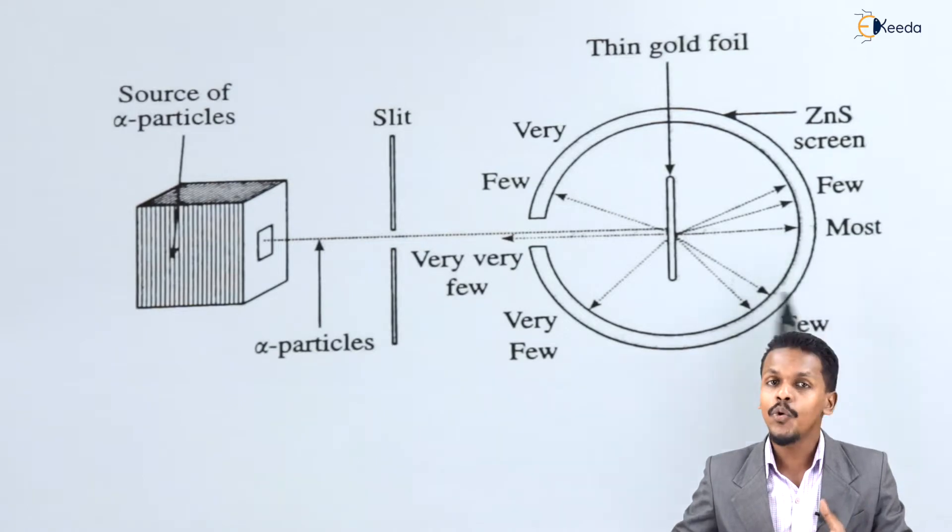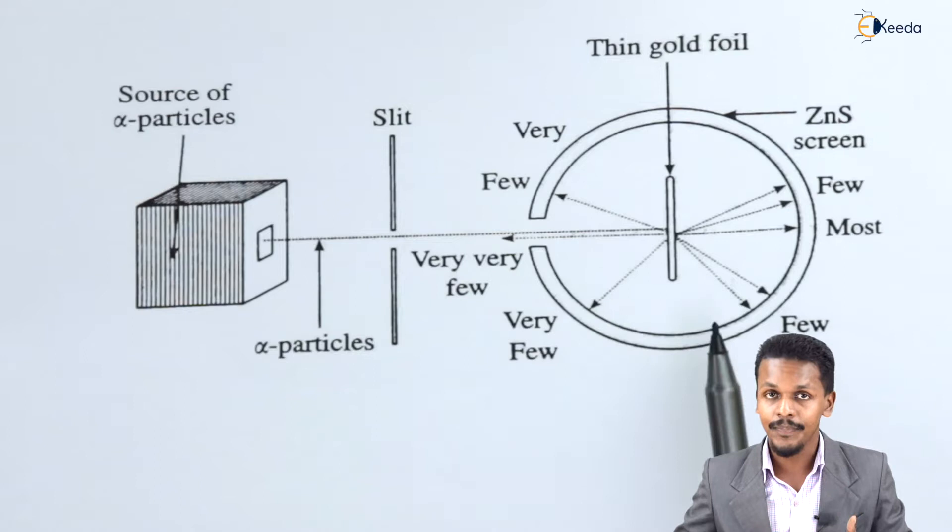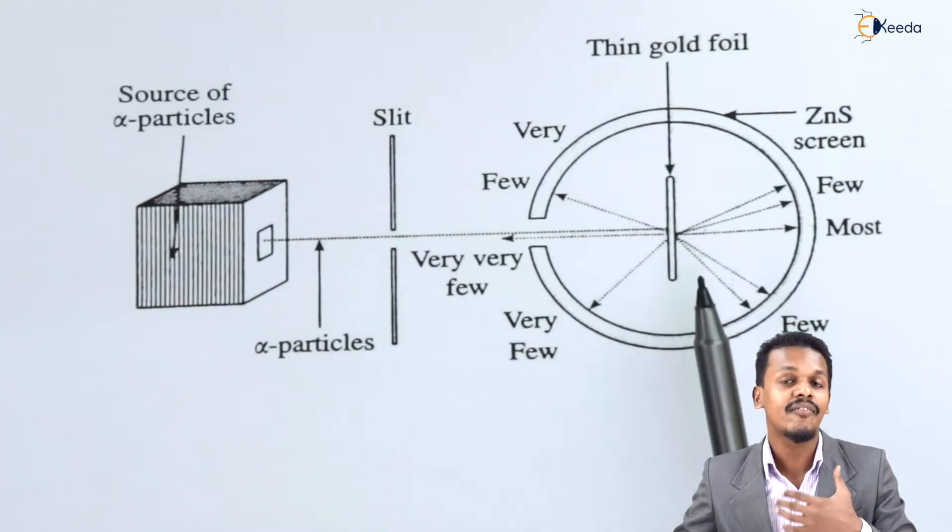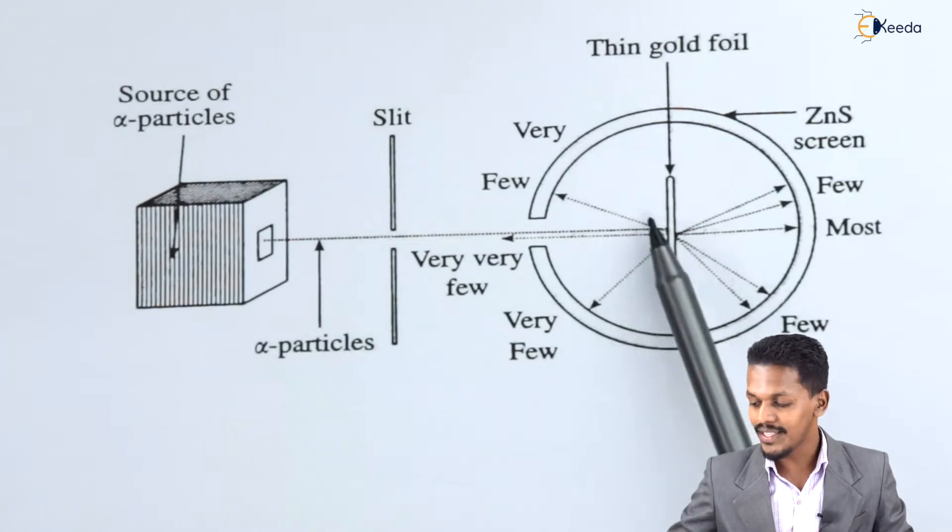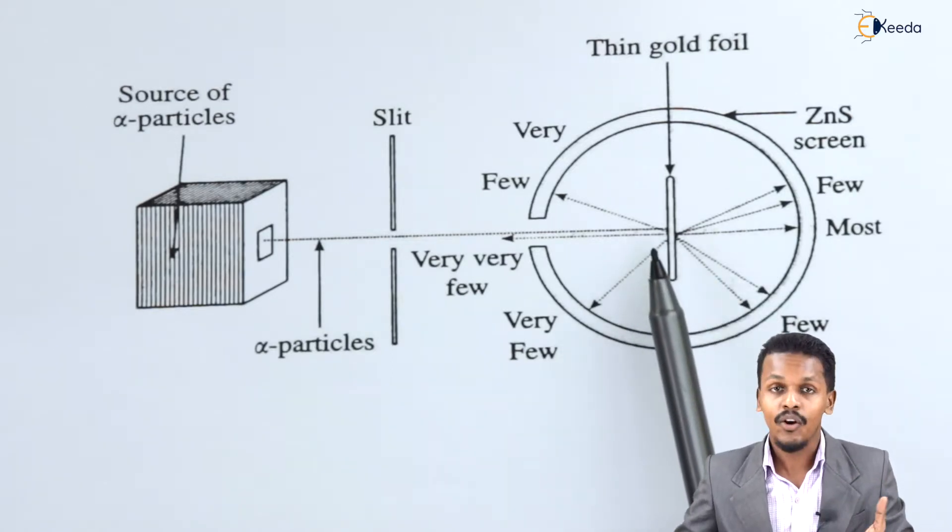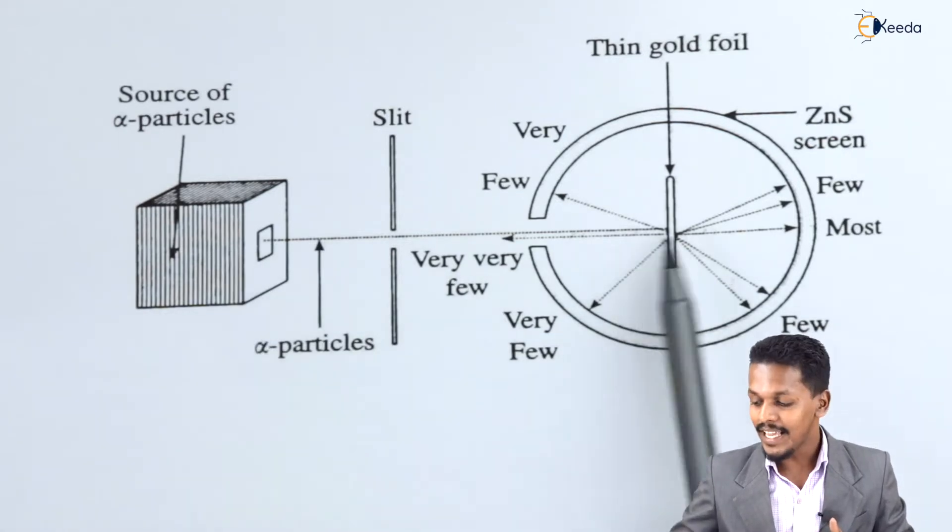But out of which, 0.0125% of the alpha particles were scattered. They were deflected at an angle of less than 90 degrees, as you can see over here. And out of which, one part in a million alpha particles bounced back.